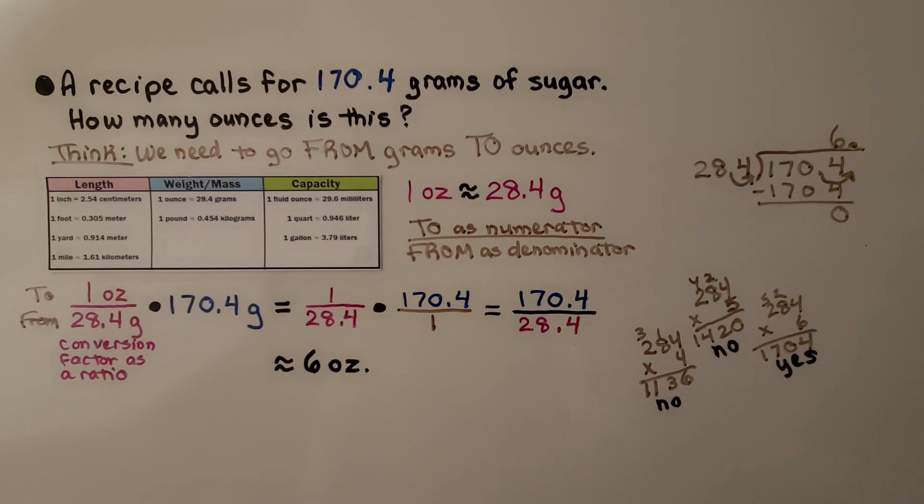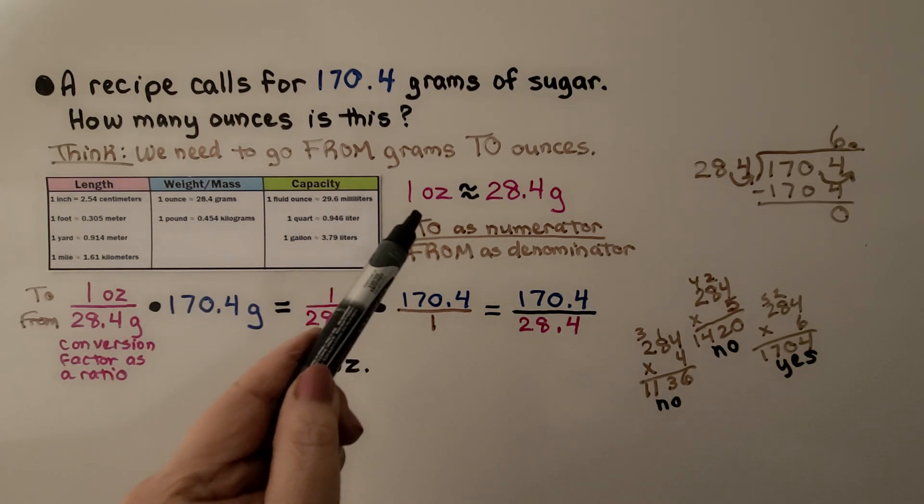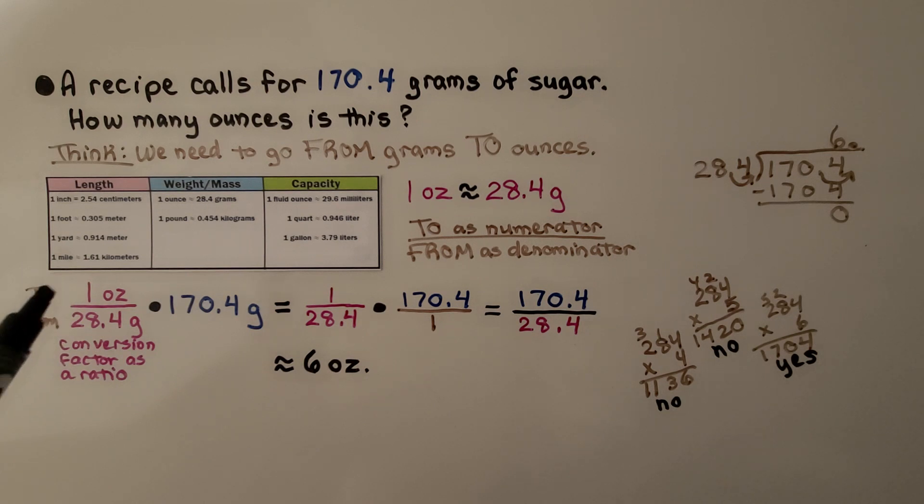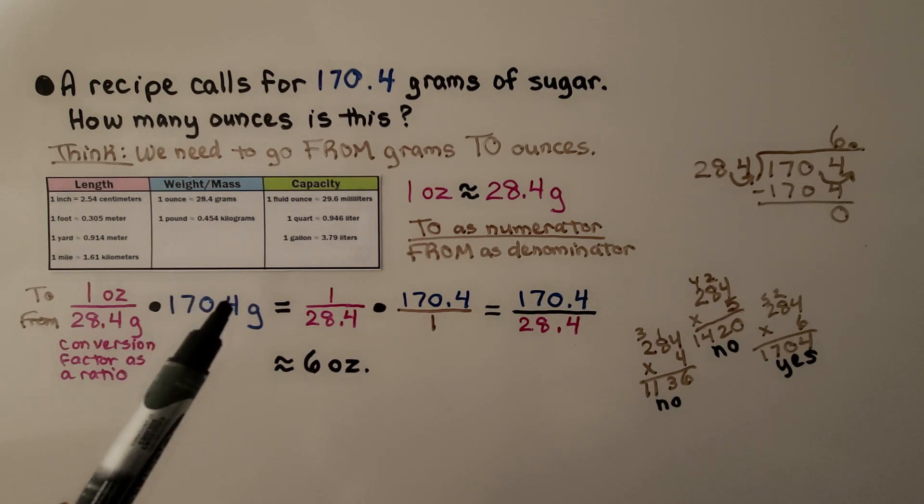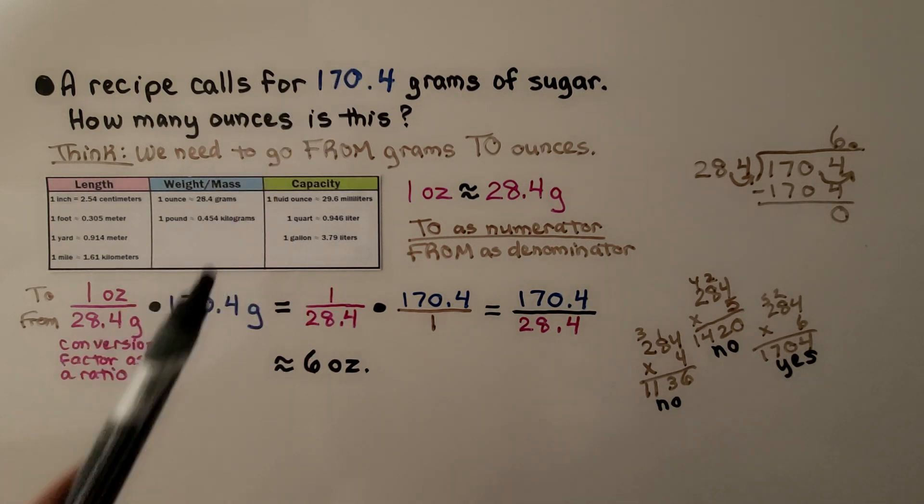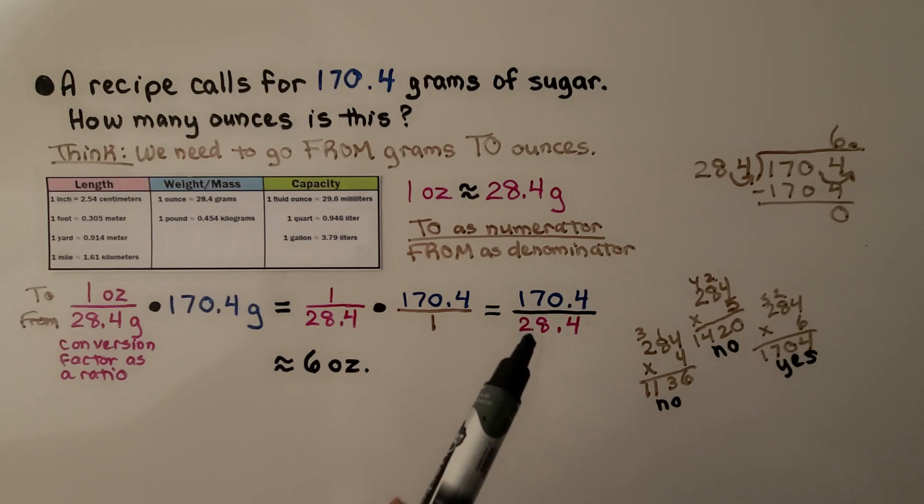A recipe calls for 170.4 grams of sugar. How many ounces is this? We need to go from grams to ounces. We have 1 ounce over 28.4 grams as our conversion factor as a ratio. We're going to multiply it by the 170.4 grams of sugar. If we write this over 1, we have 170.4 over 28.4, and we can solve this with division.